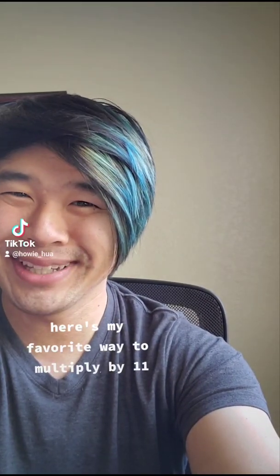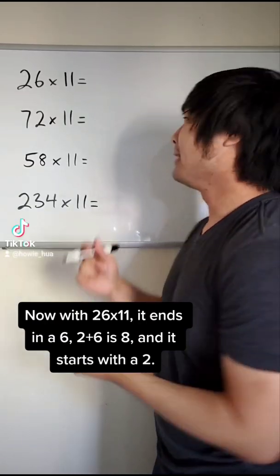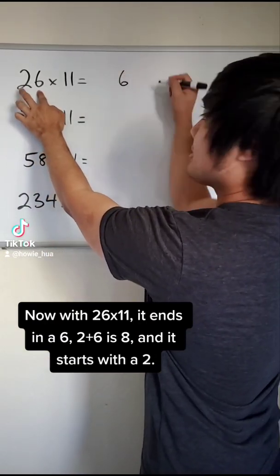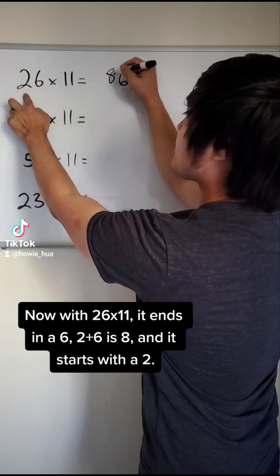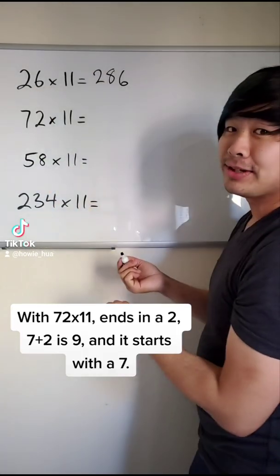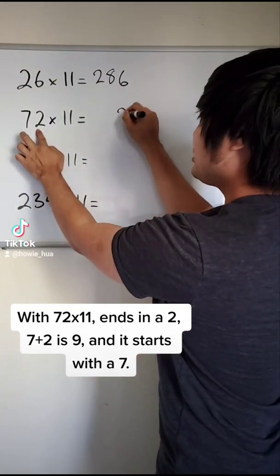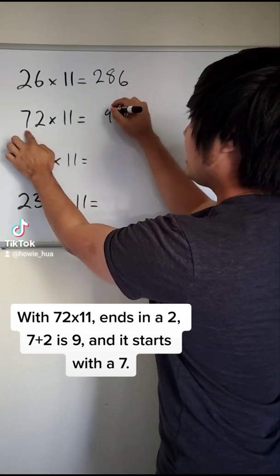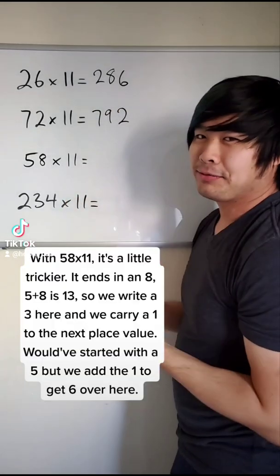Here's my favorite way to multiply by 11. Now with 26 times 11, it ends in a 6. 2 plus 6 is 8, and it starts with a 2. With 72 times 11 ends in a 2. 7 plus 2 is 9, and it starts with a 7.